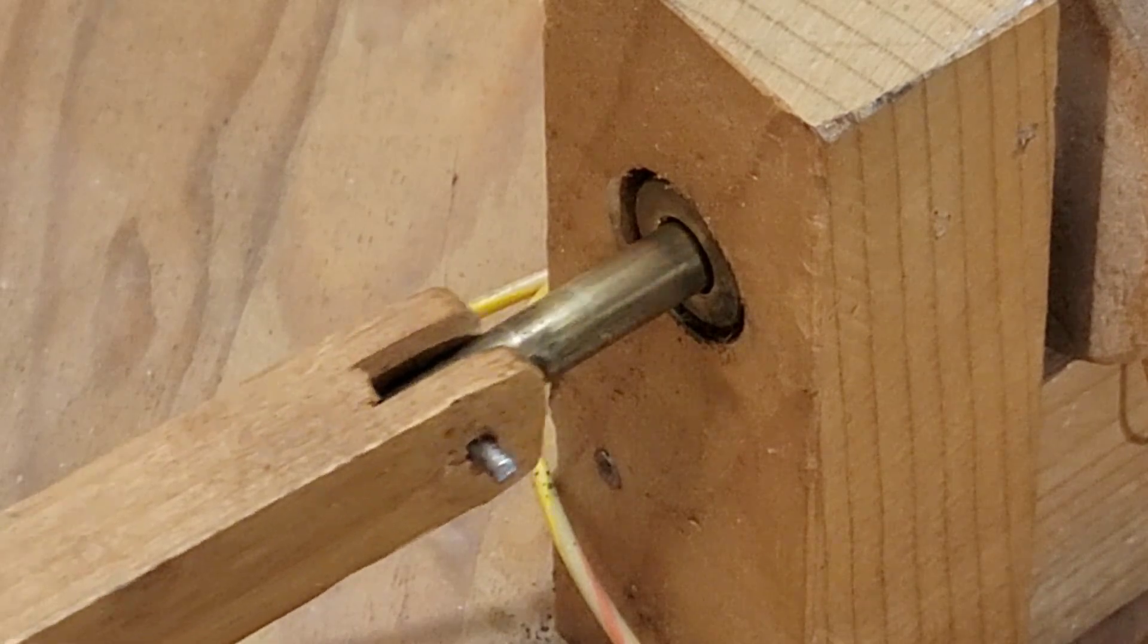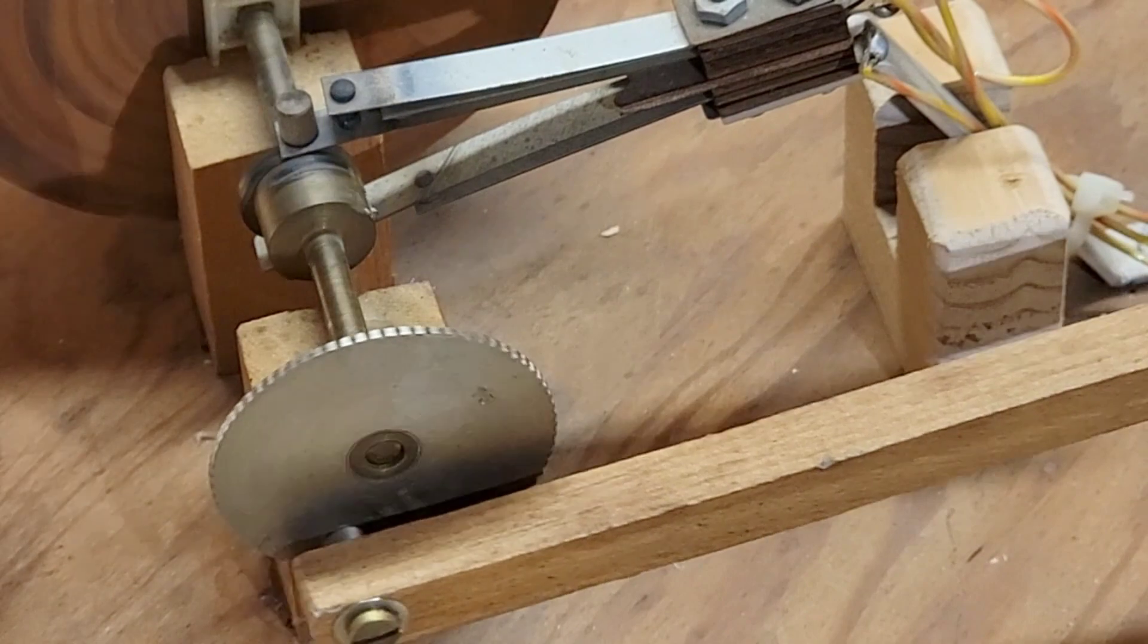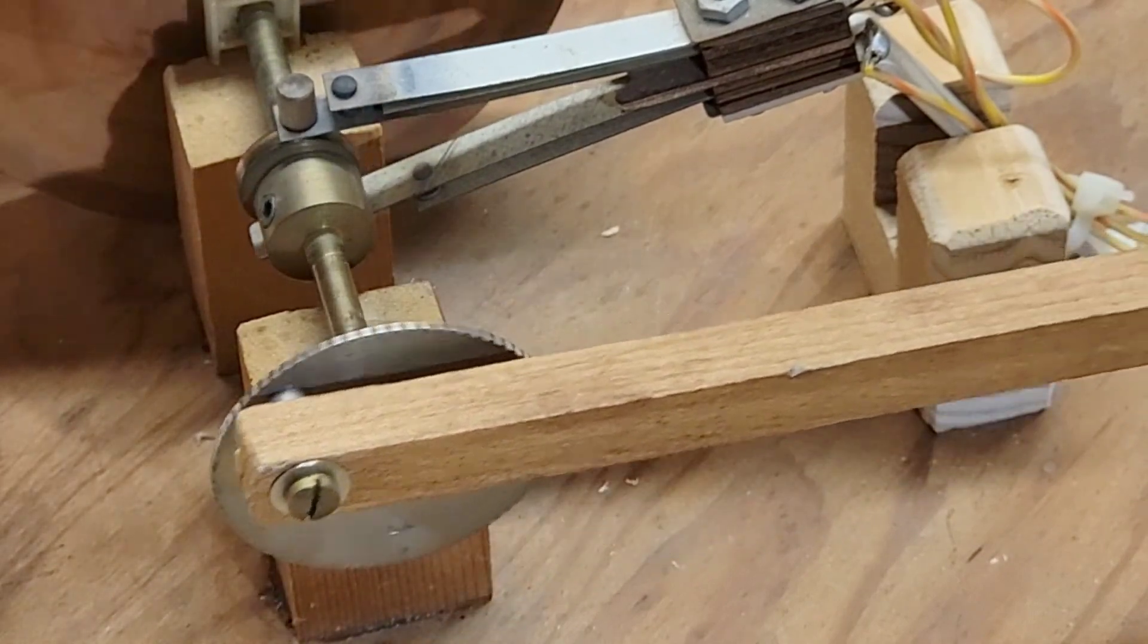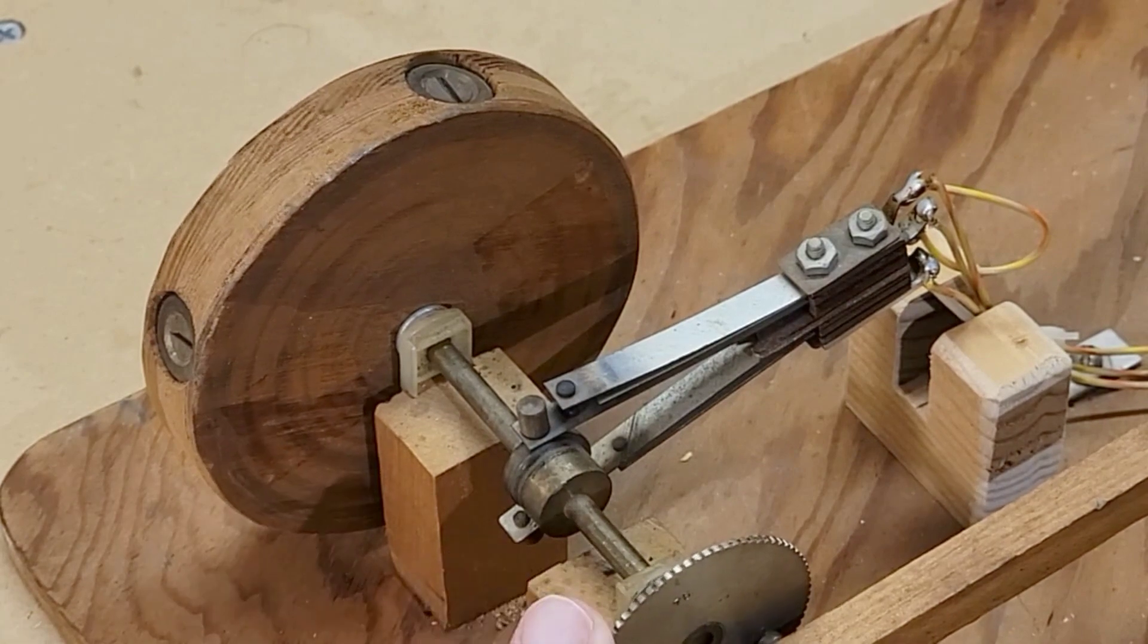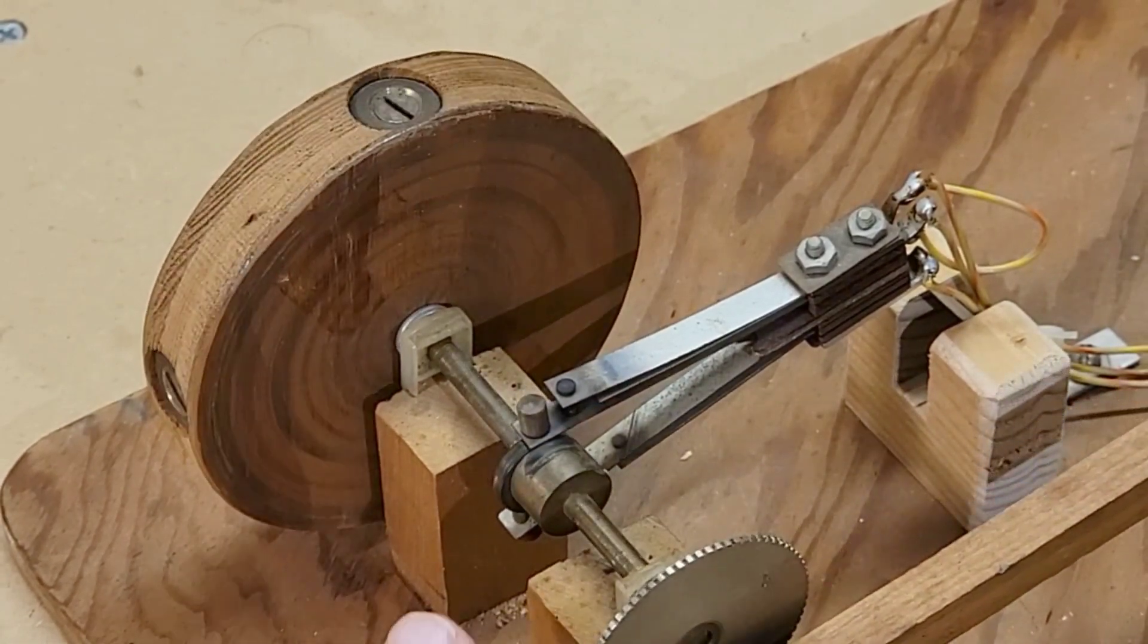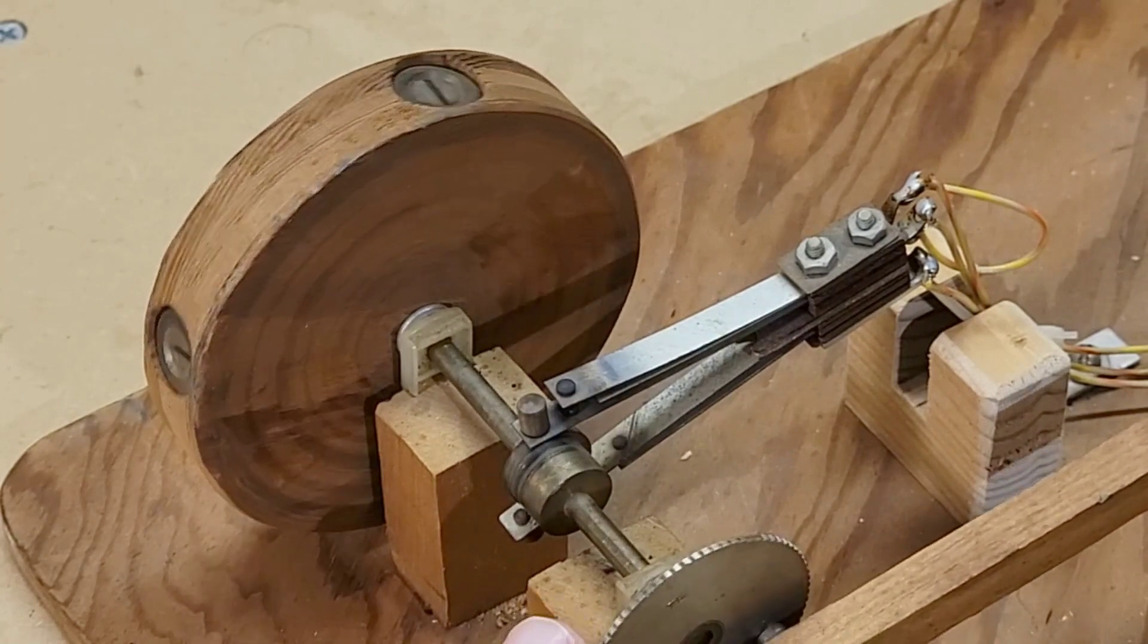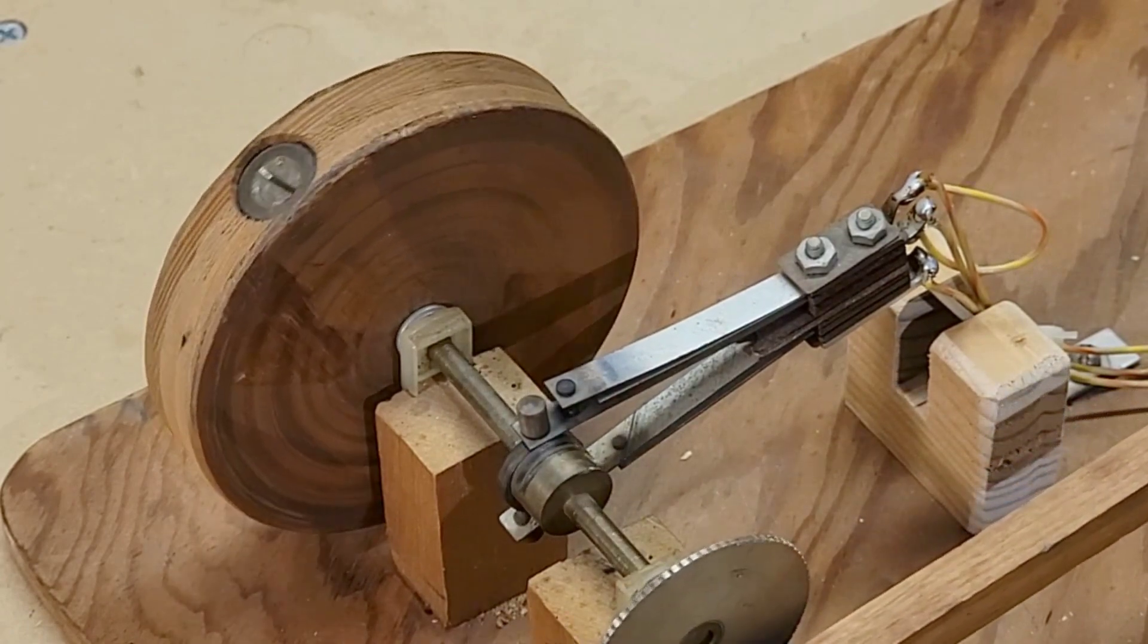The piston rod is attached to a round wheel that serves as a crank for the crankshaft and flywheel. The flywheel is a three and a half inch disc of plywood with brass weights inserted.